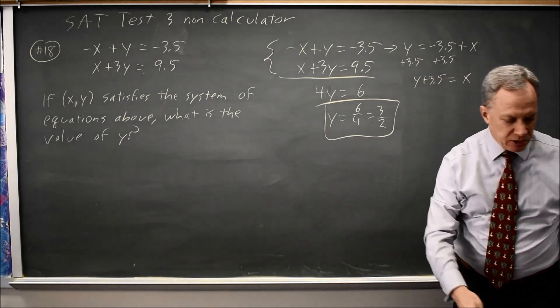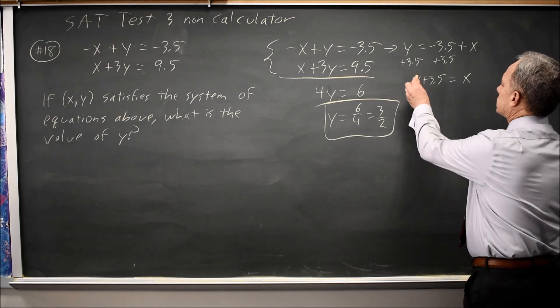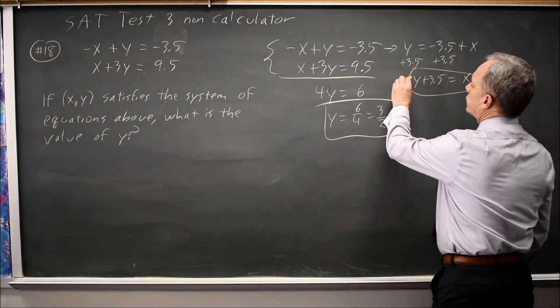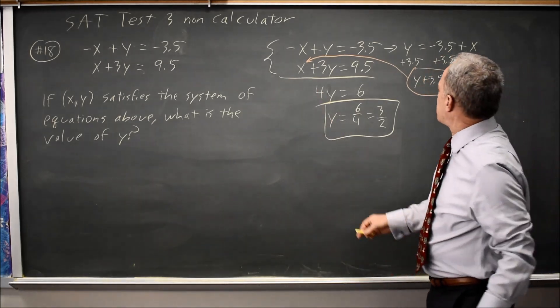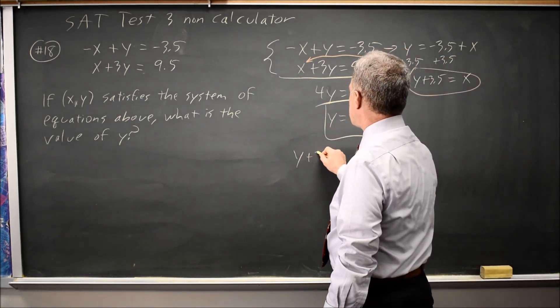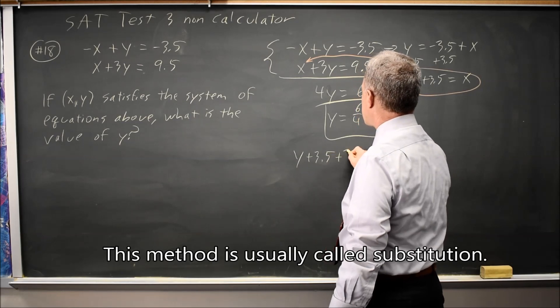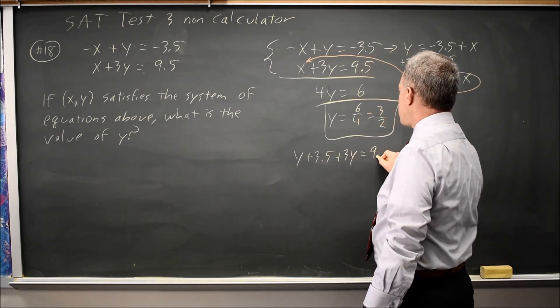I can now substitute that in for x in the second equation. And that gives me y plus 3.5 plus 3y equals 9.5.